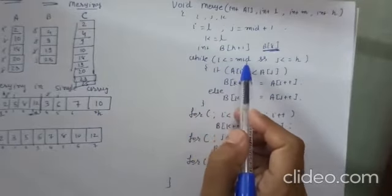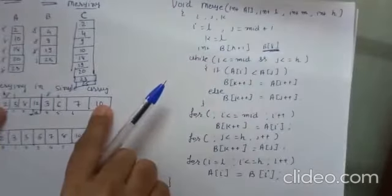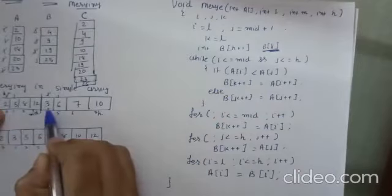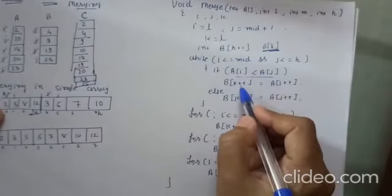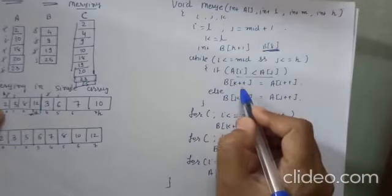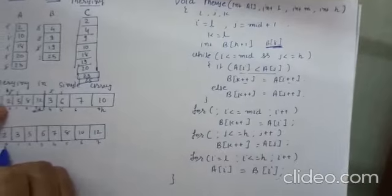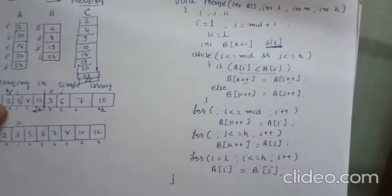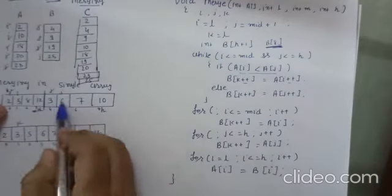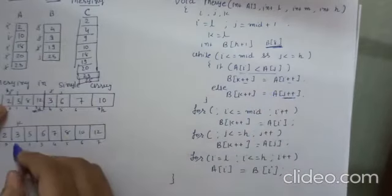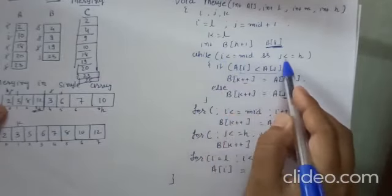While I is less than or equal to mid and J is less than or equal to H: if A of I is less than A of J — for example 2 is less than 3 — then we copy A of I into B of K using post-fix increment, so both I and K are incremented. Otherwise, A of J is copied into B of K. This procedure is repeated until I is less than or equal to mid and J is less than or equal to H.